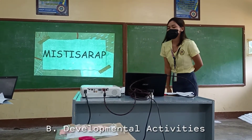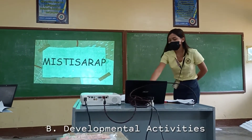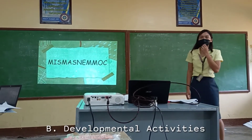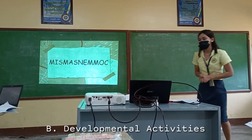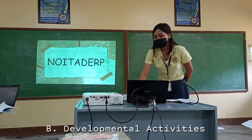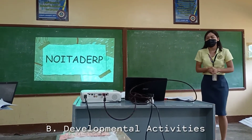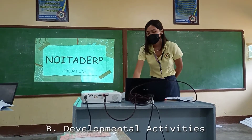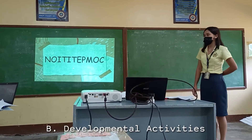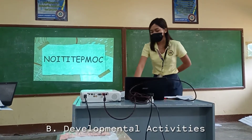What about the second word? Gemma. Yes, it is parasitism. What about the third word? Very good, it is commensalism. And the fourth one, what do you think is the hidden word? Predation. And lastly, what do you think is the last hidden word? Mayamel. Very good, it is competition.